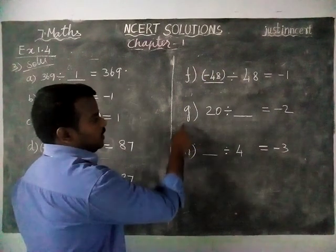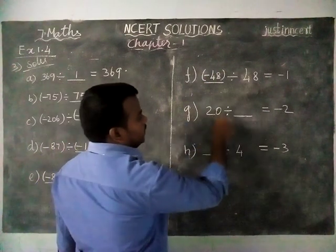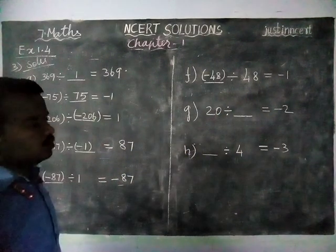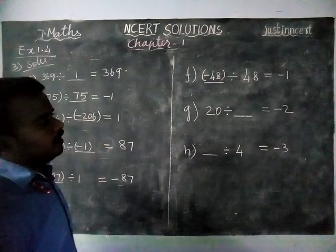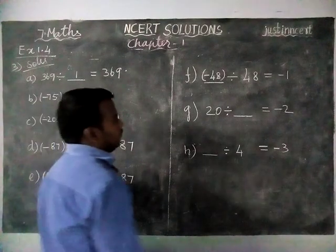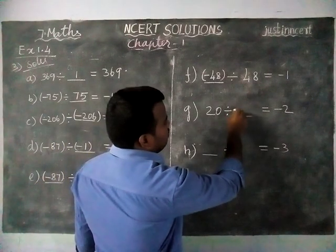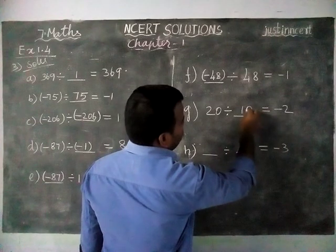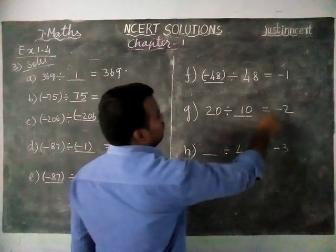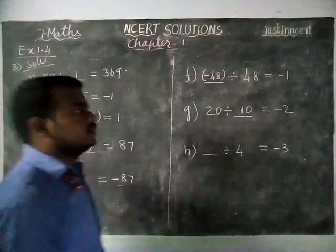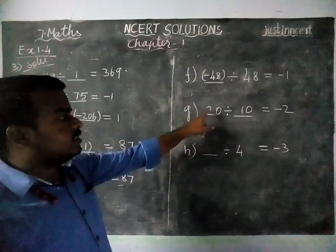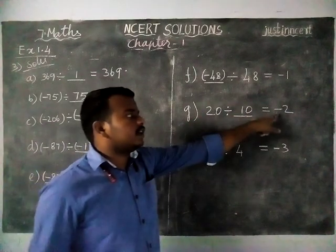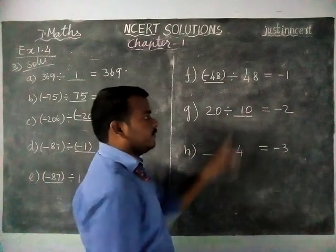Next option g: 20 divided by an unknown number is equal to minus 2. If you divide by 10, you get 2, since 10 times 2 is 20. But here this is a plus sign — if the divisor is also plus we can't get a minus result, so the signs will be different. The answer is minus 10.